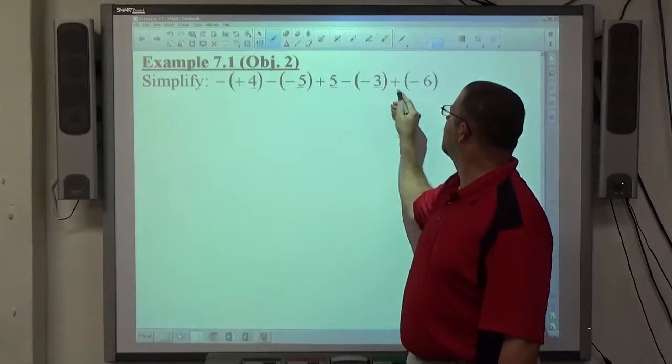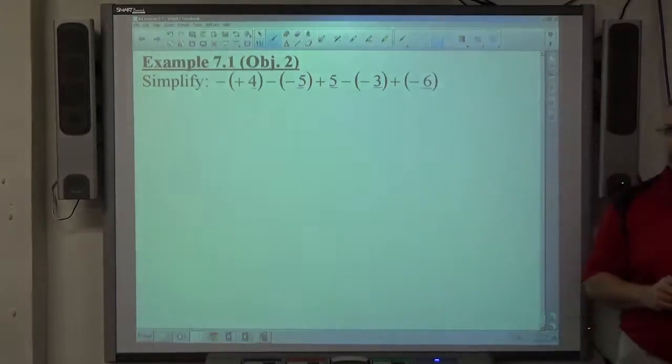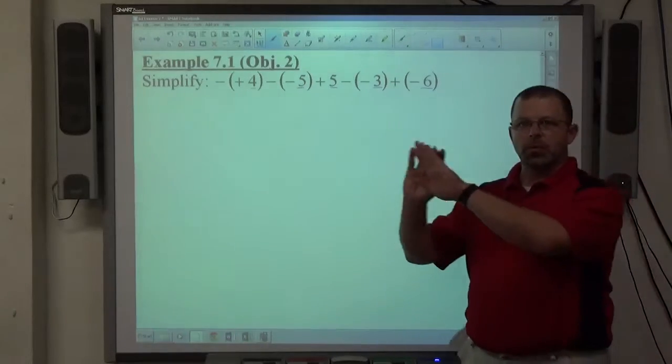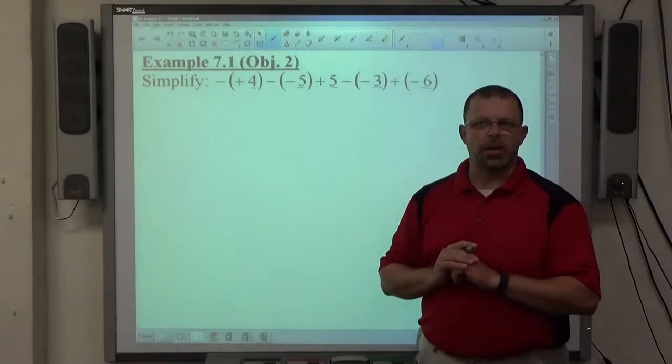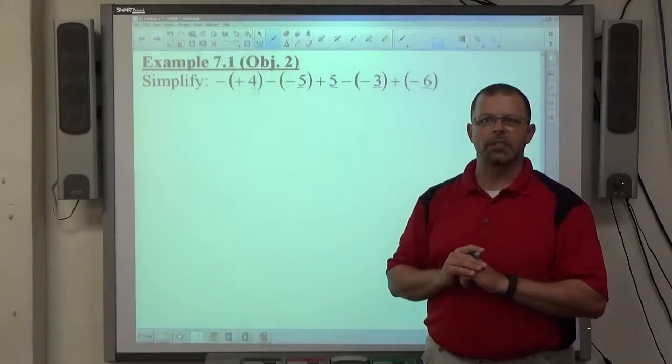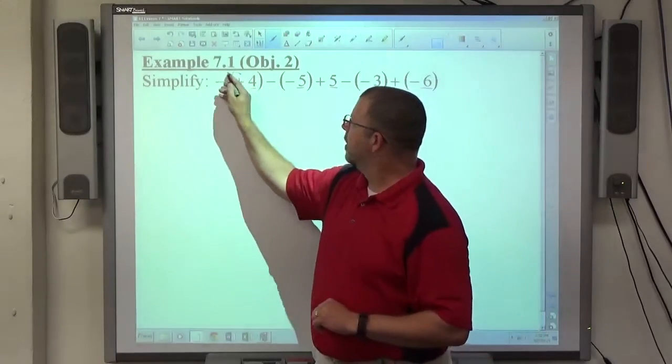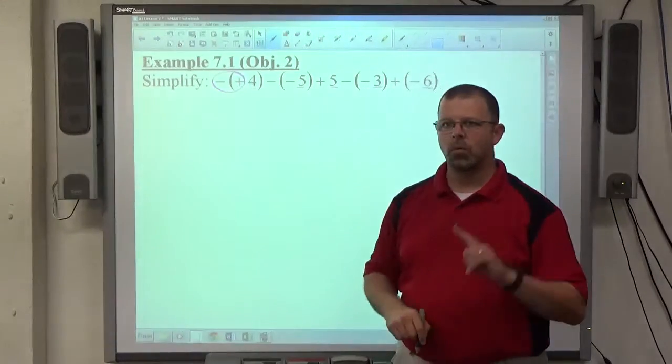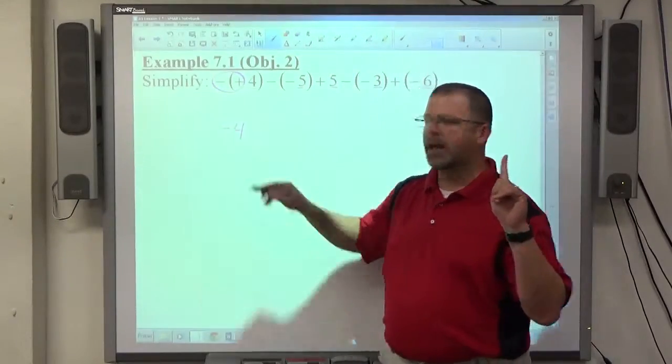4, 5, 5, 3, 6. Starting with the first number, look directly in front of it and count the negative signs. Plus signs don't matter, only negative signs matter. How many negatives are there? One. So it's negative 4. One's odd, negative.